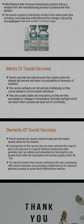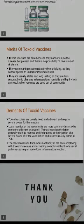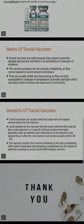Toxoid vaccines prevent disease and there is no possibility of reversion of virulence. The vaccine antigens are not actively multiplying, so they cannot spread to unimmunized individuals. They are usually stable and long-lasting, as they are less susceptible to changes in temperature, humidity, and light, which can be an issue when vaccines are used in the community.